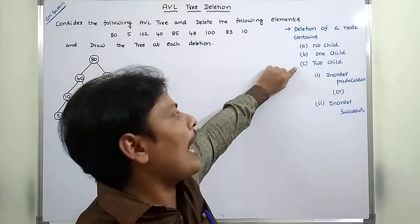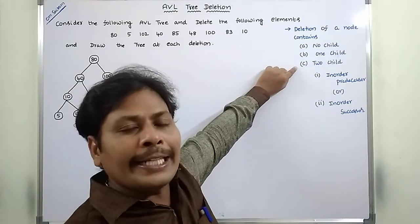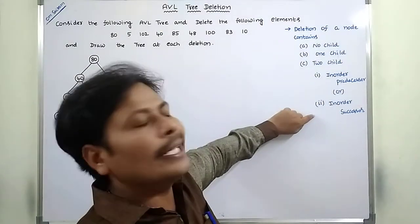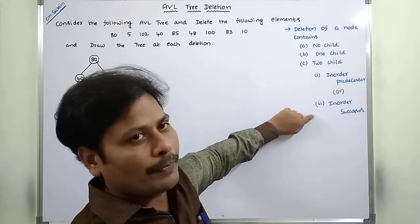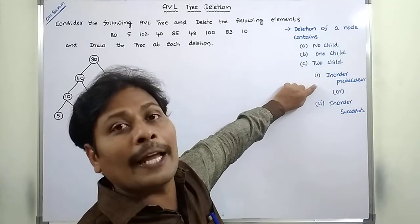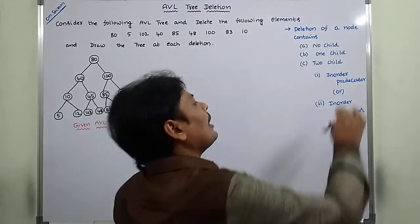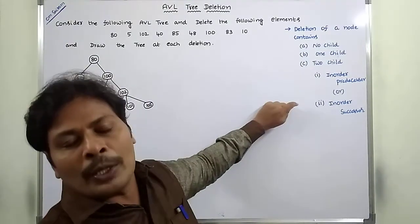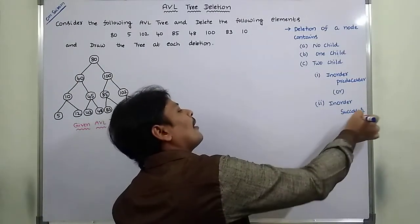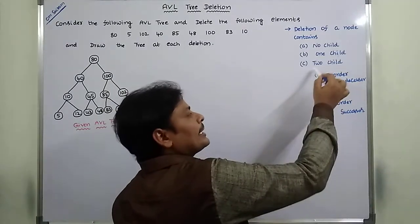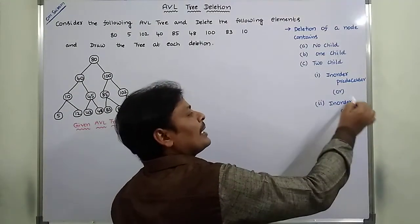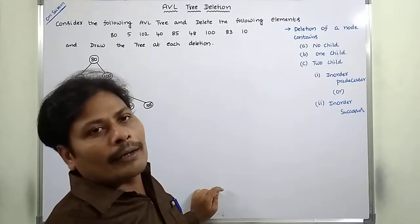If the deleted node has two children, the deleted node can be replaced with either the in-order predecessor or in-order successor of that node. The in-order predecessor is the maximum element in the left subtree. The in-order successor is the minimum element in the right subtree.